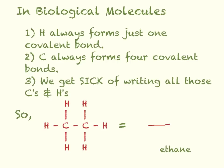This is a single bond between two carbons — there's a carbon here and a carbon here. Since carbon always makes four bonds and we aren't representing any other atoms explicitly, we know there are three hydrogens at each end, so the carbon makes one, two, three, four bonds. Each hydrogen is only making a single bond.